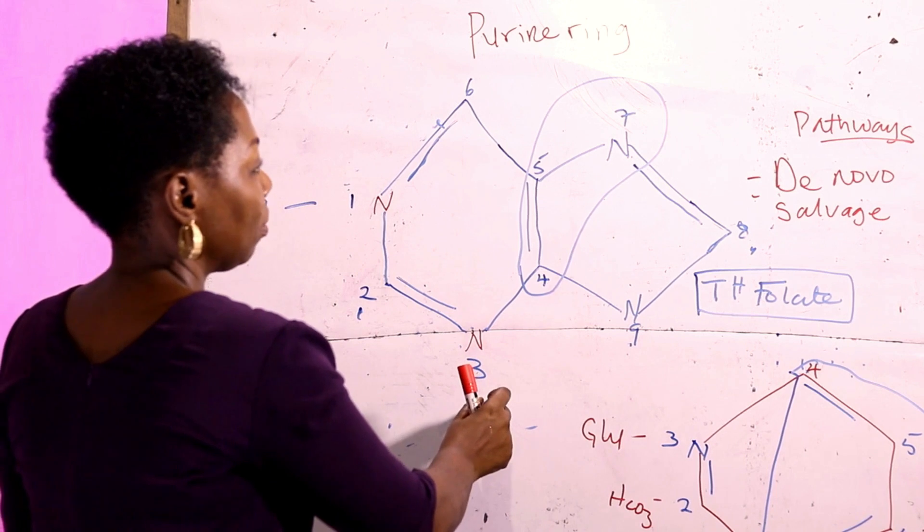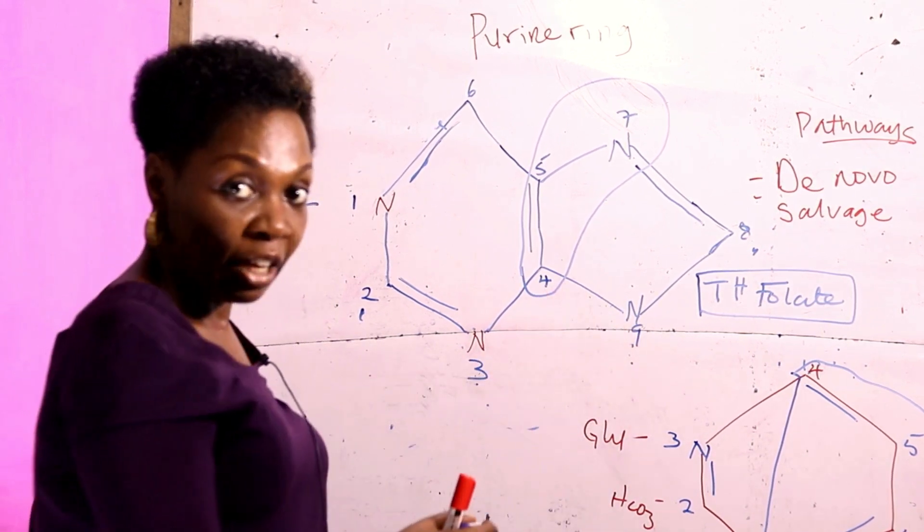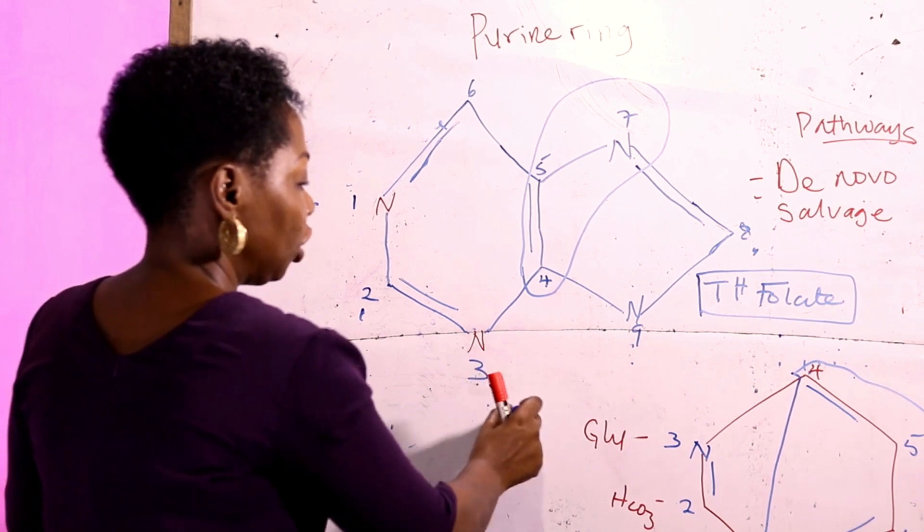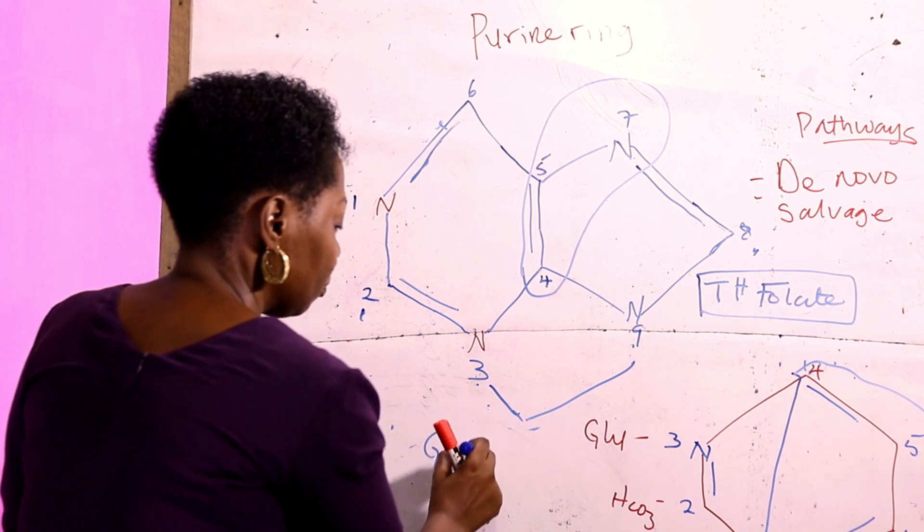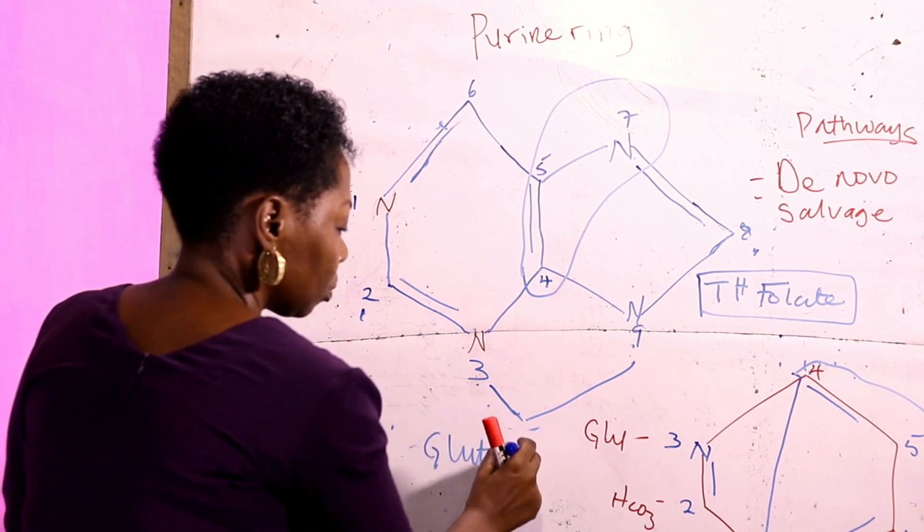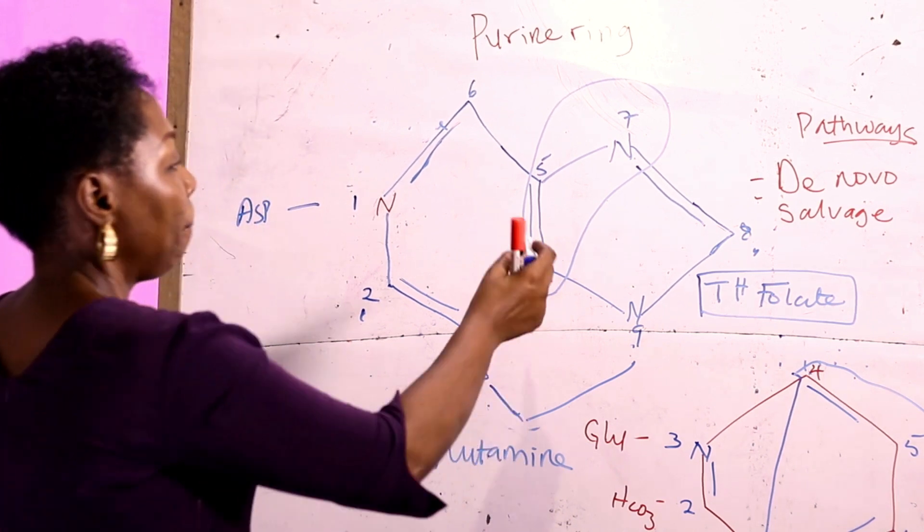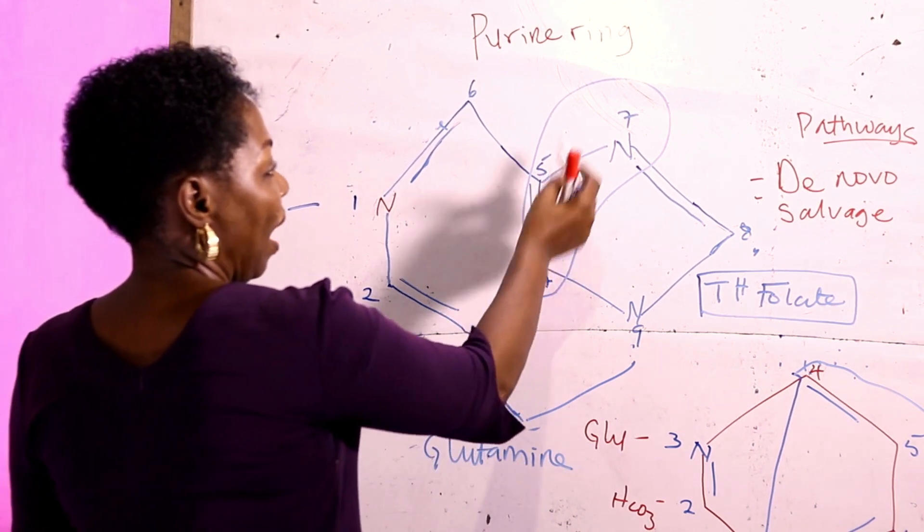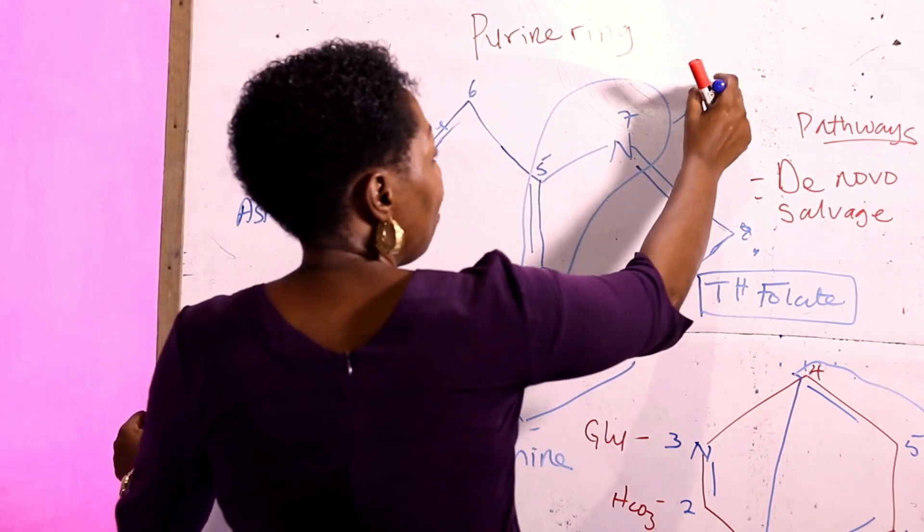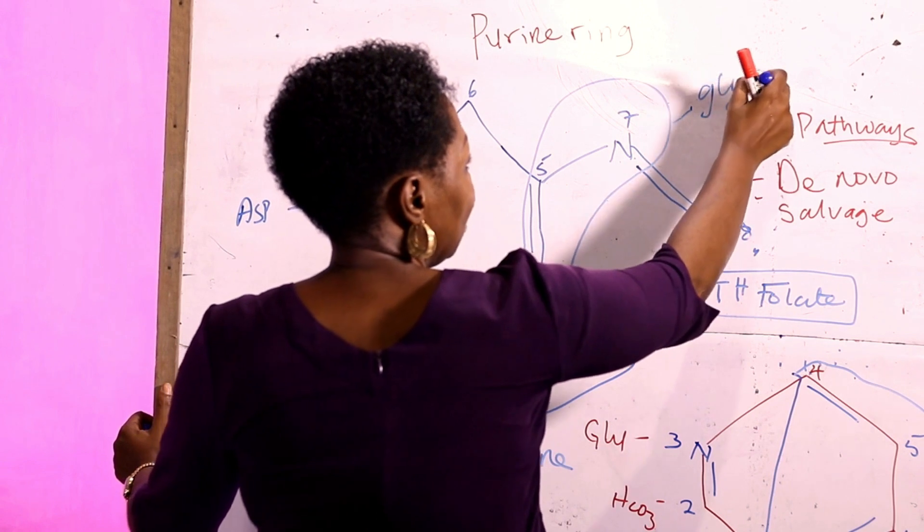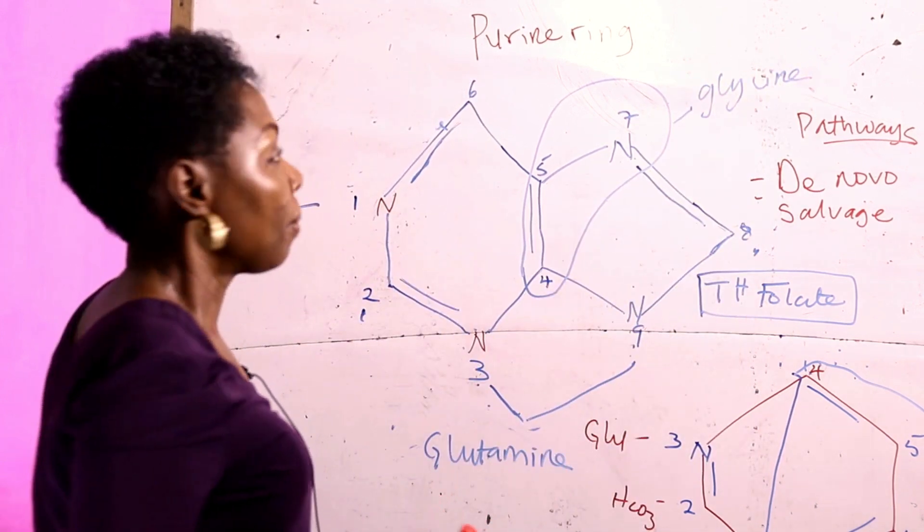Position 3 and position 9: the nitrogen atom is furnished by the precursor molecule glutamine. Position 4, 5, and the nitrogen atom in position 7 is supplied by the molecule glycine.